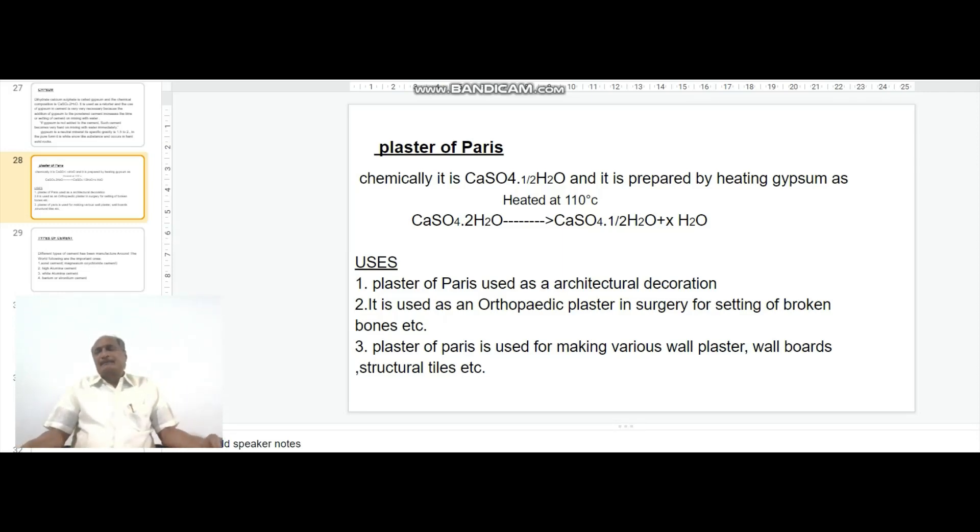It is prepared by heating gypsum at about 110 degrees Celsius. That is, dihydrated calcium sulphate on strong heating at about 110 degrees Celsius forms calcium sulphate along with half mole of water with the liberation of one and a half moles of water. CaSO4·½H2O is called plaster of Paris.